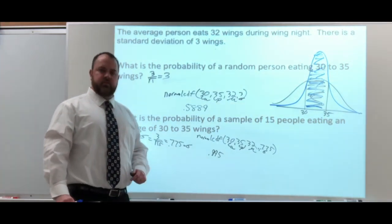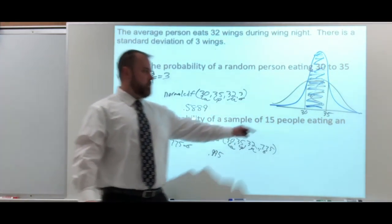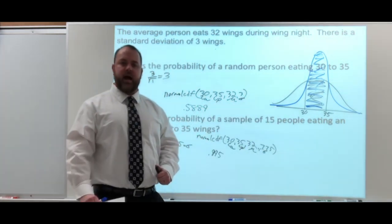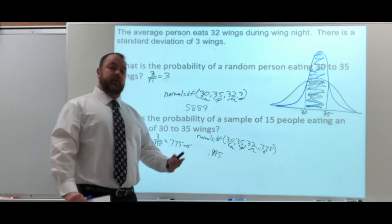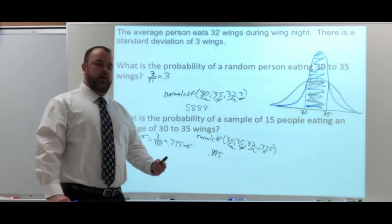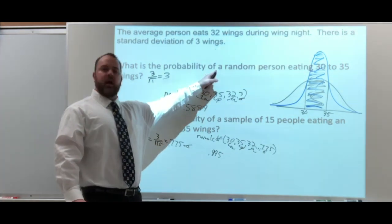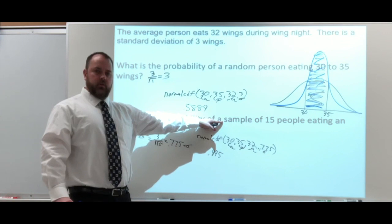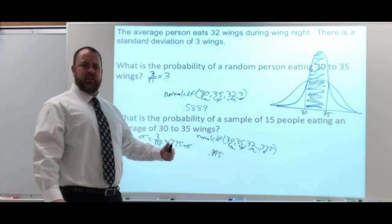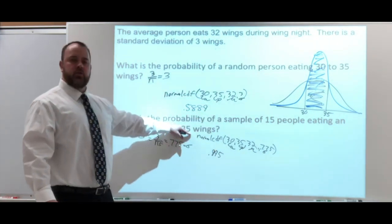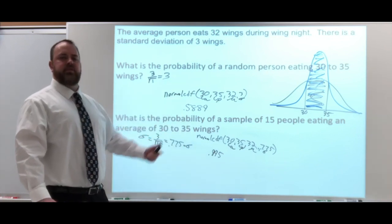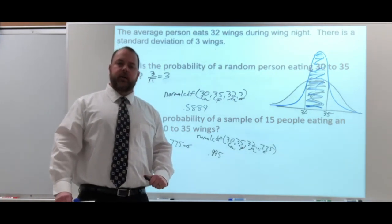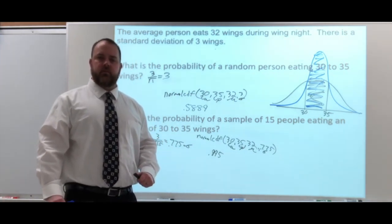Those are two examples of the central limit theorem. The pictures really demonstrate what's happening — things getting closer and closer to the average. The important thing is to check the conditions, make sure they're satisfied, and think about whether you're looking at a single individual or a sample. And remember, don't overthink these — the normal curve functions work the same way we did them before. That procedure hasn't changed. So that's the central limit theorem as an add-on to section 5.1.